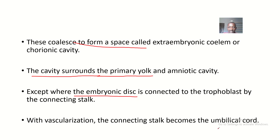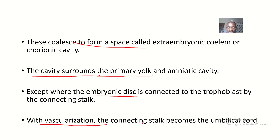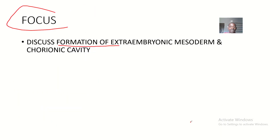Then, with vascularization, the connecting stalk becomes the umbilical cord. That's basically how the formation of the extra-embryonic mycidem, extra-embryonic selum, or the chorionic cavity works. See you guys in the next embryology lecture.